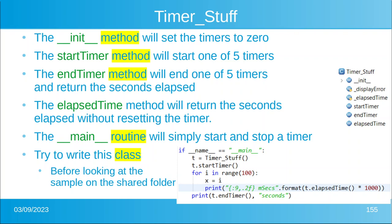The `__init__` method will set all timers to zero. We'll have five timers. `start_timer` will start one of the five, defaulting to the first. `end_timer` will end the timer. The `elapsed_time` method will return the seconds elapsed without resetting the timer. The main routine will simply start and stop a timer. Now try to write the `TimerStuff` class without looking at the answers.